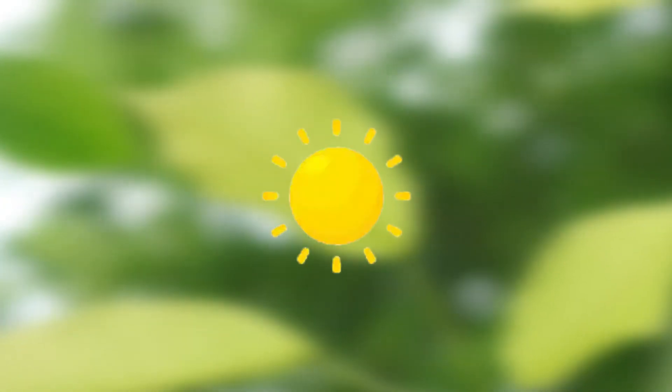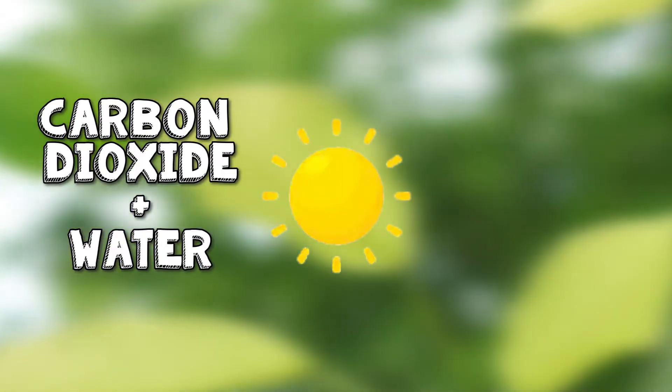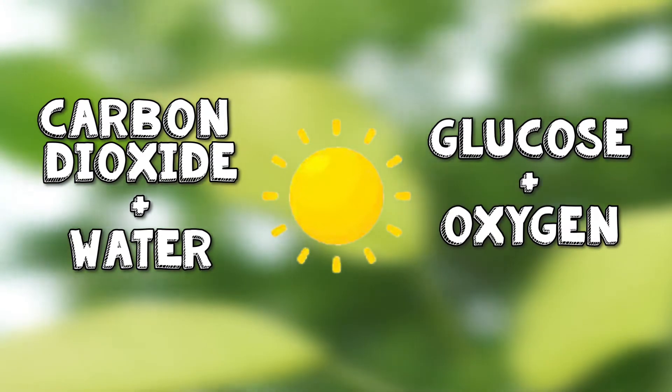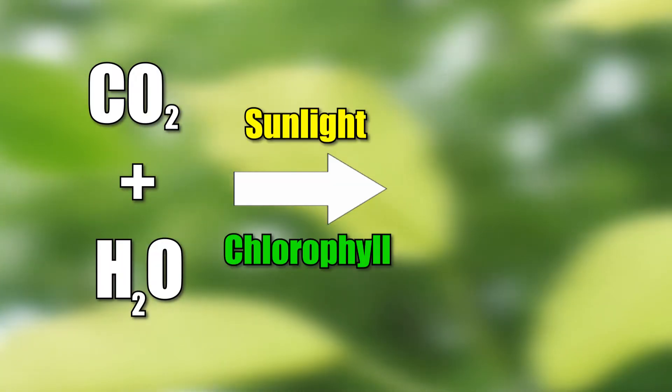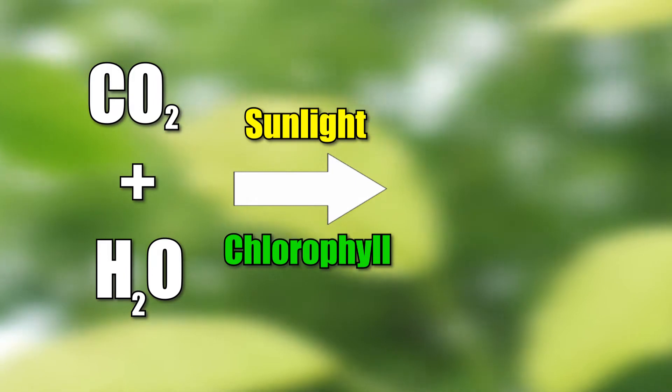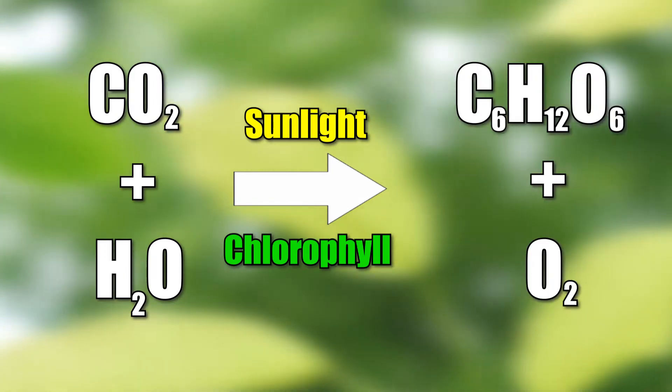During photosynthesis, a plant will use energy from the sun to turn carbon dioxide and water into glucose and oxygen. So let's make this into a basic equation: carbon dioxide plus water, using light with chlorophyll, becomes glucose and oxygen.